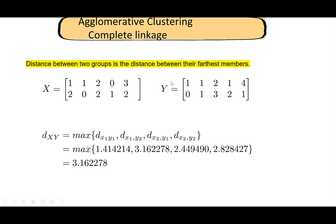I have two groups X and Y, each with two elements. The distance between cluster X and cluster Y is the maximum of all pairwise distances. D(x1, y1) is just the Euclidean distance between the first row of X and the first row of Y. For complete linkage we look at the maximum distance, so the largest pair turns out to be x1 and y2, with a distance of 3.162278.